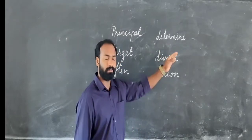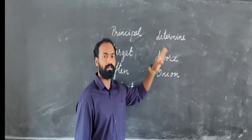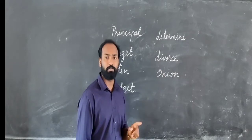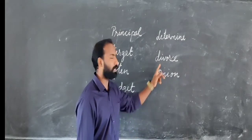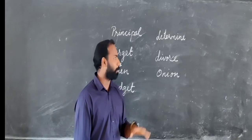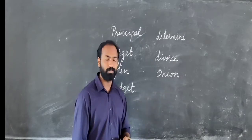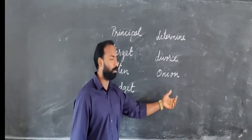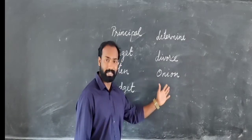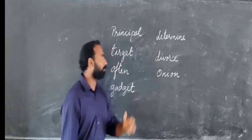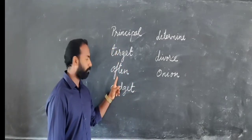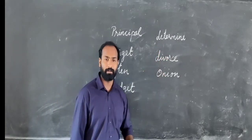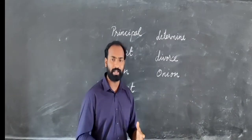How do you say 'determine'? Determine. The next commonly mispronounced word is 'divorce' — it is not 'diverse,' it is 'divorce.' And the last one: it is not 'onion,' it is 'onion.' Once again, the full list: principal, target, offer, gadget, determine, divorce, onion. Keep these in mind and improve your English when you speak.